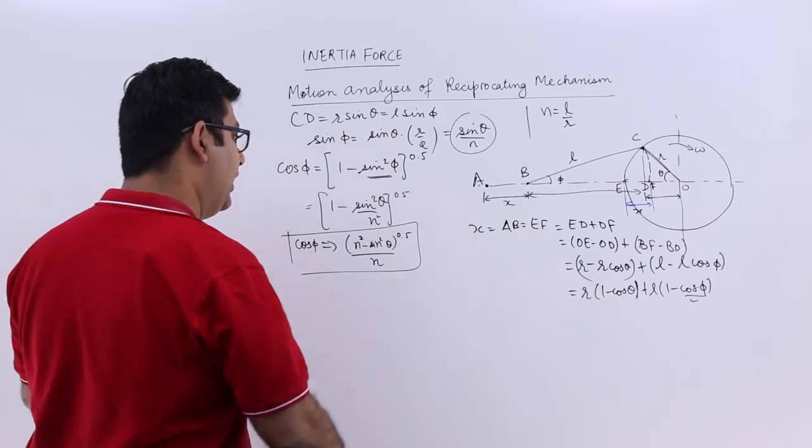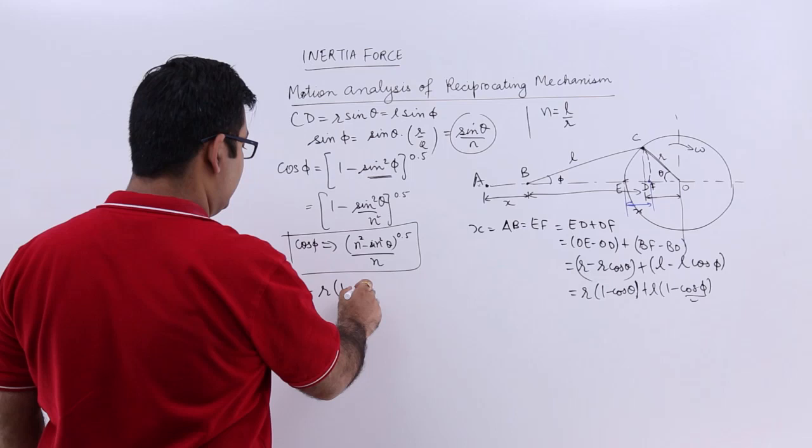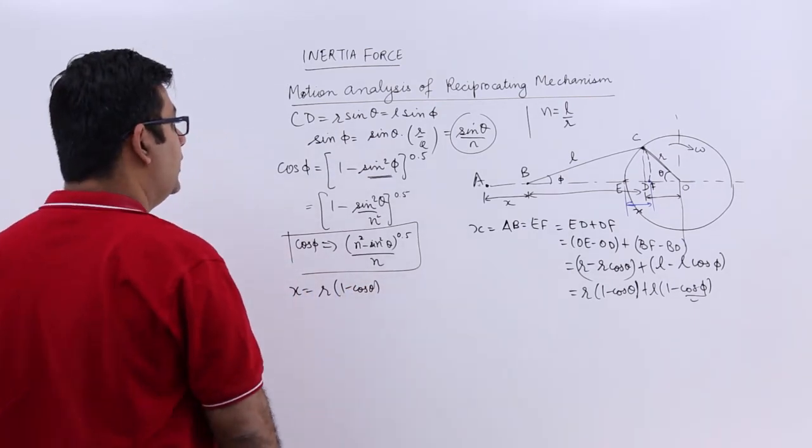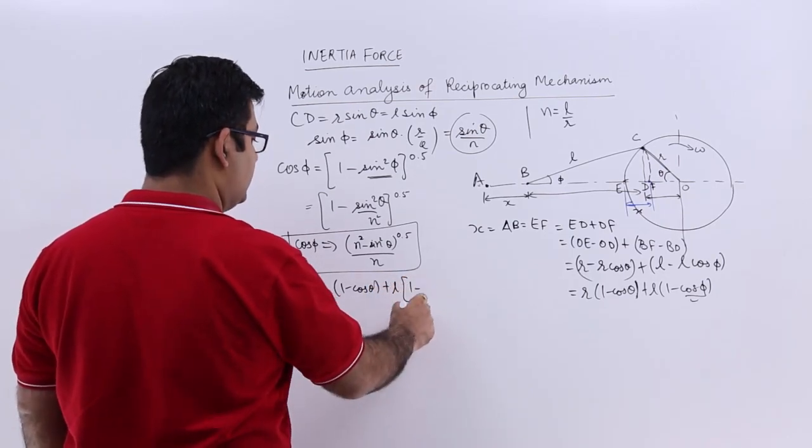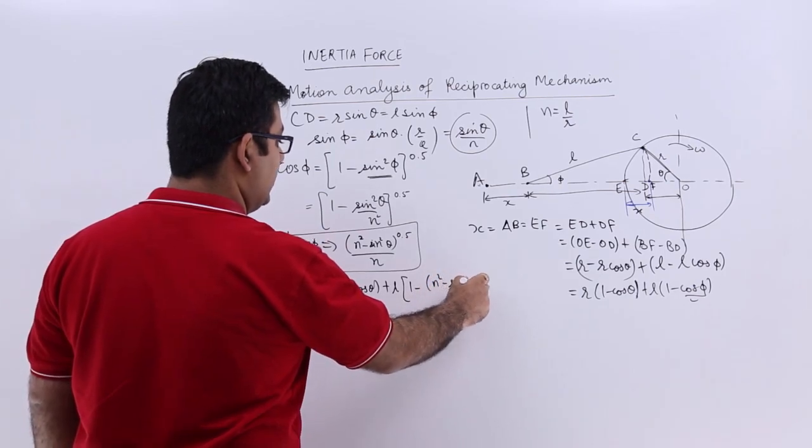So I will substitute this value over here. So I will get X is equal to R into 1 minus cos theta plus L into 1 minus square root of N square minus sin square theta.